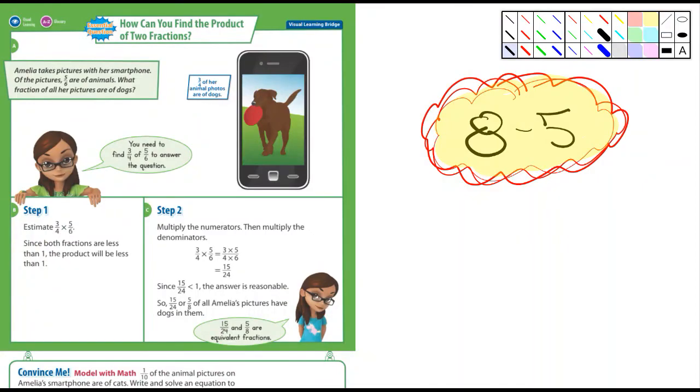Okay, fifth graders, this is 8-5 and it's just multiplying fractions together. And this is something I've actually already taught you. You guys are actually kind of way ahead of the curve here.